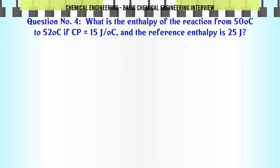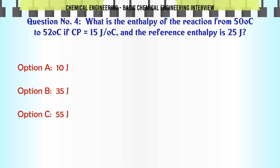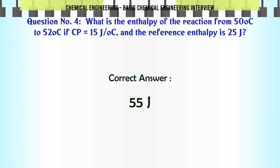What is the enthalpy of the reaction from 50°C to 52°C if Cp = 15 J/°C and the reference enthalpy is 25 J? A) 10 J. B) 35 J. C) 55 J. D) 65 J. The correct answer is D) 65 J.